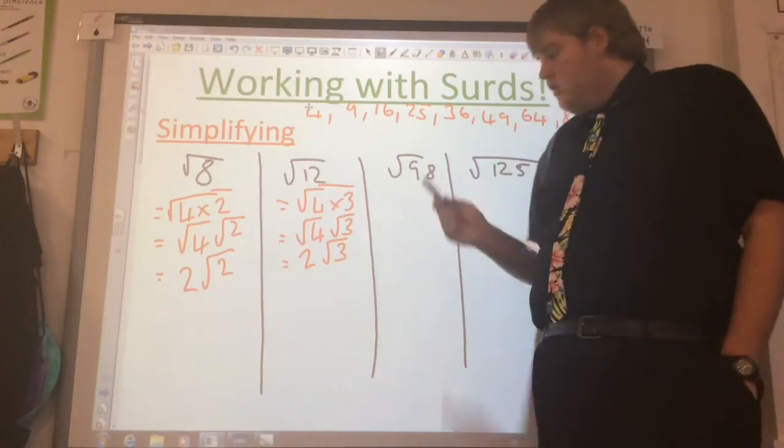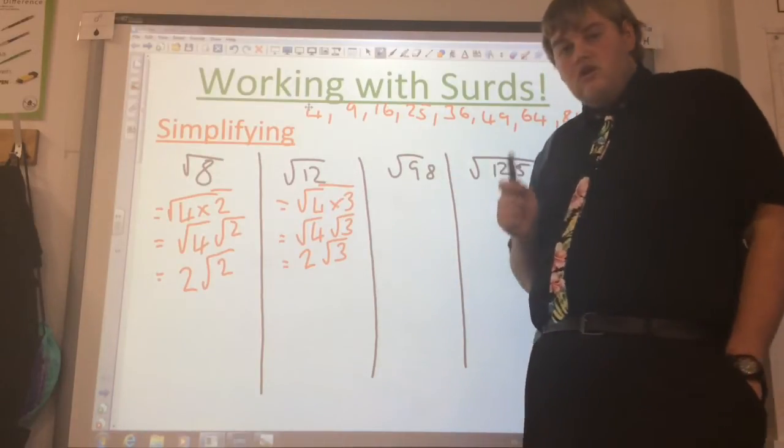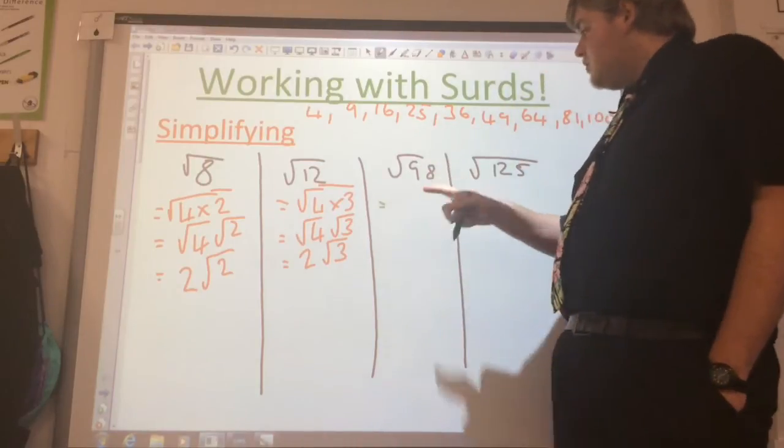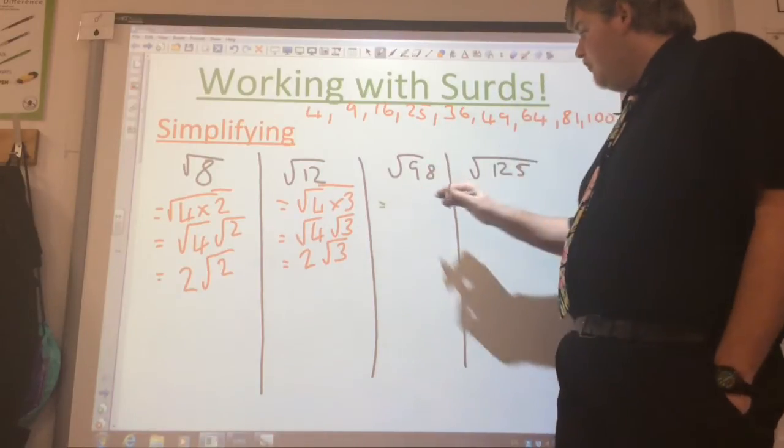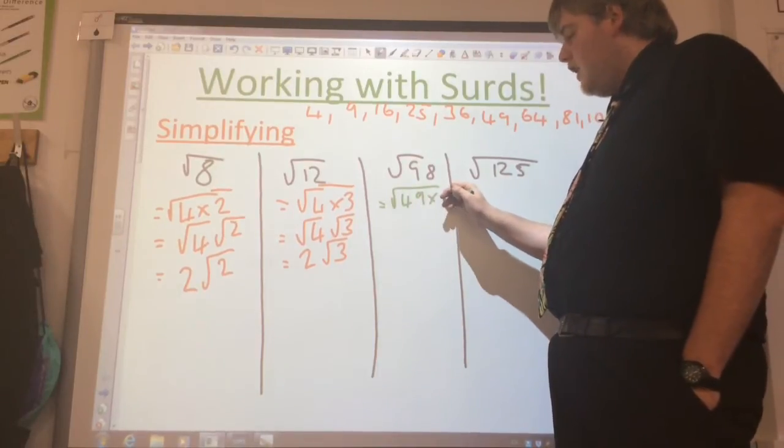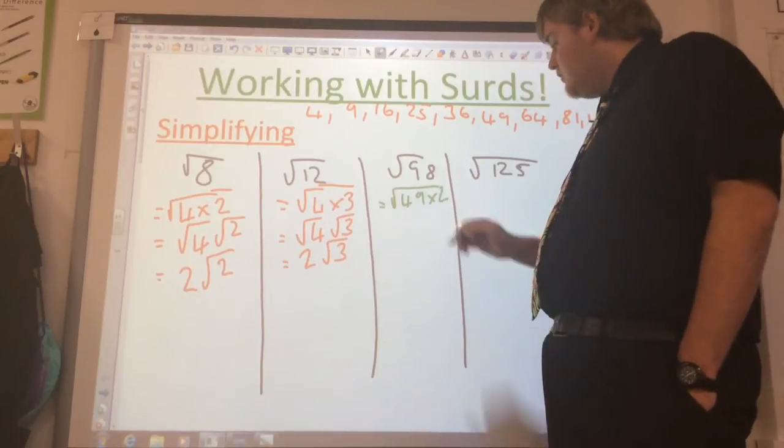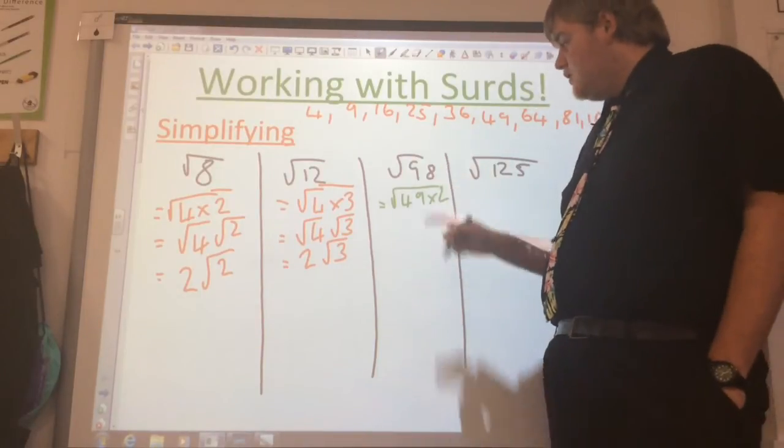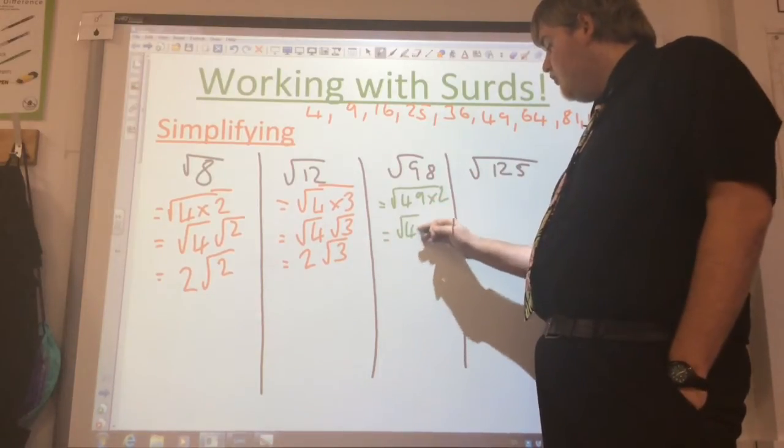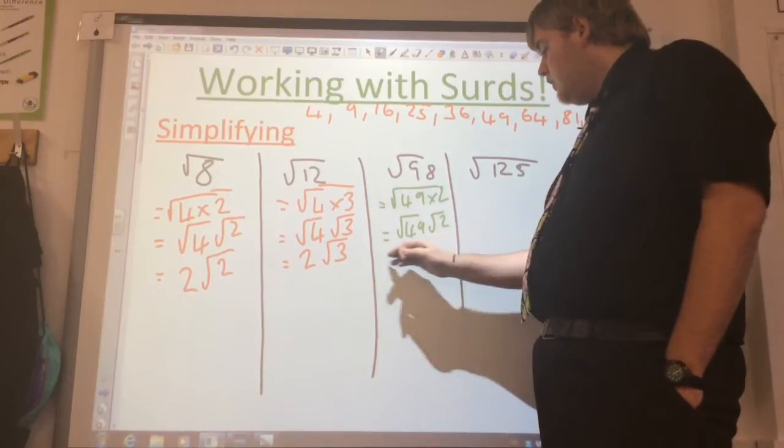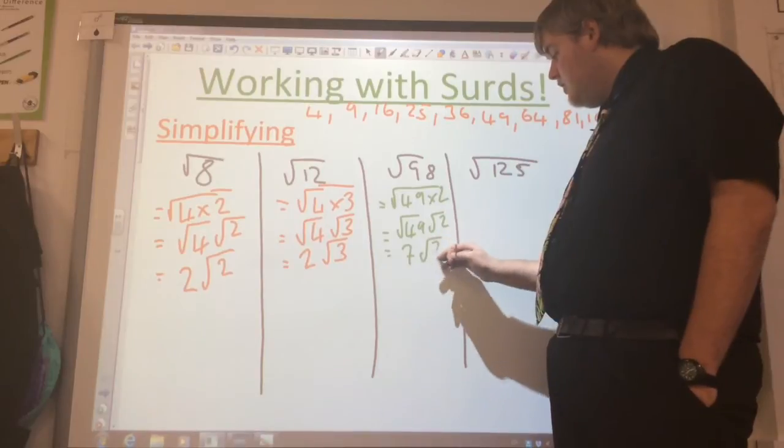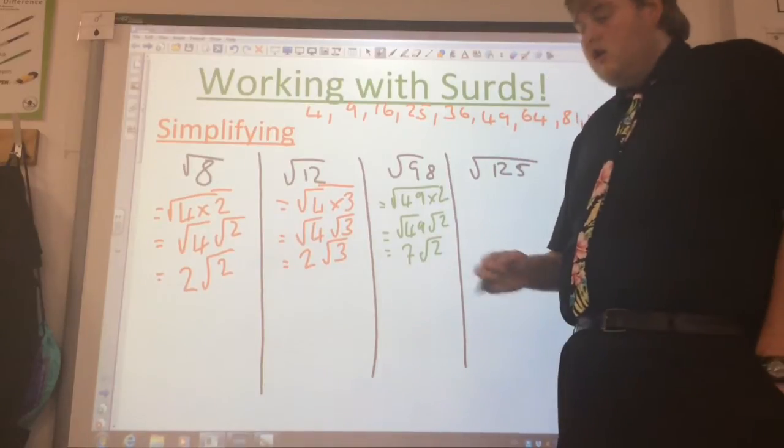Route 98. Again, this one there are multiple options that you can go with, but again look for the biggest square number. Biggest square number that goes into this, 49. 49 multiplied by, that's right, 2. So 49 multiplied by 2 gives us 98. So this is going to be the square root of 49 times by the square root of 2. Again we split this up, route 49, root 2. Square root of 49 is 7, so this becomes a 7, this stays as our root 2.